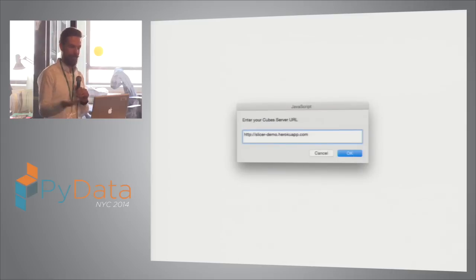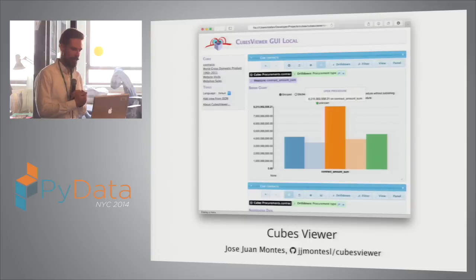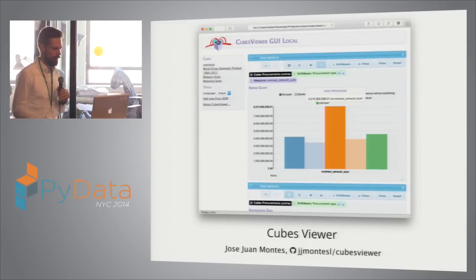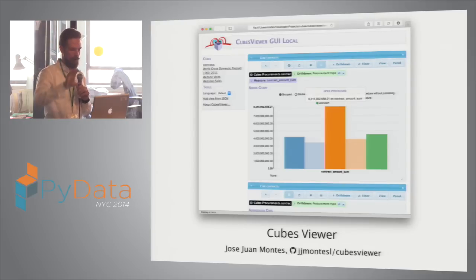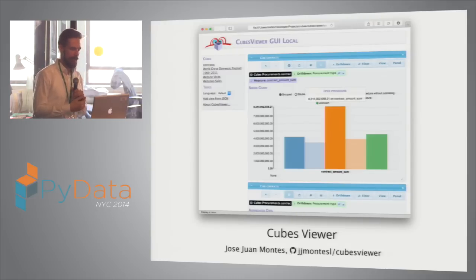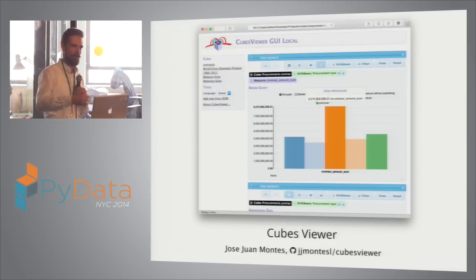Another frontend is a cube viewer developed by Jose Juan Montes, available on GitHub. It has a slightly different, more category-oriented approach. You can generate multiple reports with a concept of panels showing the flow of your reporting processes. You can display tables and charts. It's pure JavaScript and HTML, but it also has a Django backend where you can save reports, share with other users, and so on — another nice generic reporting app built on top of Cubes.